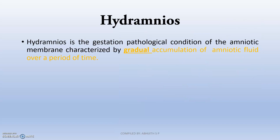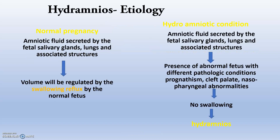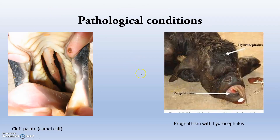The next condition is hydramnios. Hydramnios is the gestational pathological condition of the amniotic membrane characterized by gradual accumulation of fluid — gradual, as opposed to the rapid accumulation seen in hydroallantois. In normal pregnancy, amniotic fluid is secreted by the fetal salivary glands, lungs, and associated structures, and it is regulated by the swallowing reflex of the normal fetus. In hydramnios, there is an abnormal fetus with pathological conditions such as prognathism, cleft palate, and nasopharyngeal abnormalities, resulting in no swallowing reflex, which leads to hydramnios.